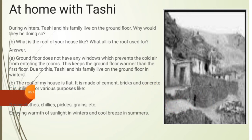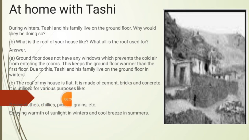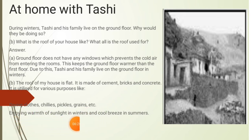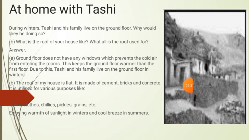The roof of my house is flat, made up of cement, brick, and concrete. It is used for various purposes like drying clothes, chillies, pickles, grain, etc., and for enjoying the warmth of sunlight in winters and cool rains in summer. But in our state Assam, we have a sloping type roof.